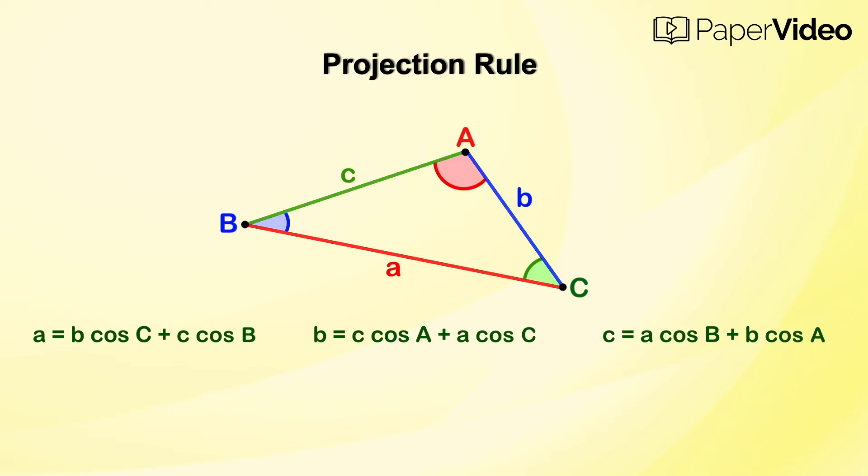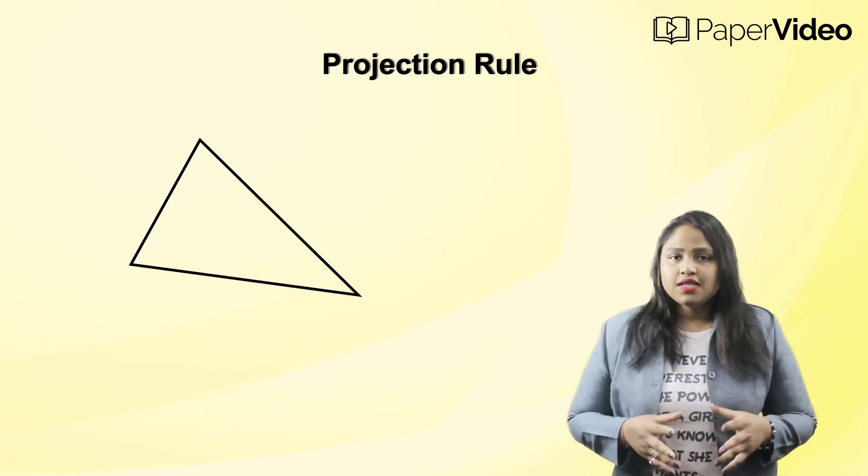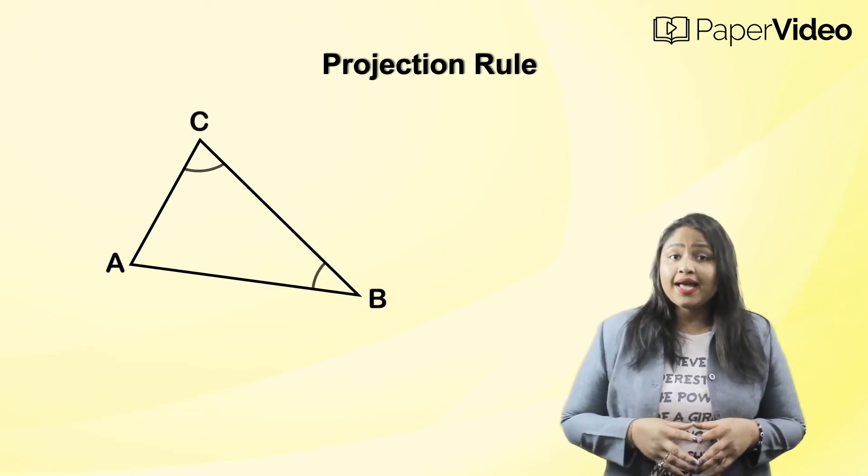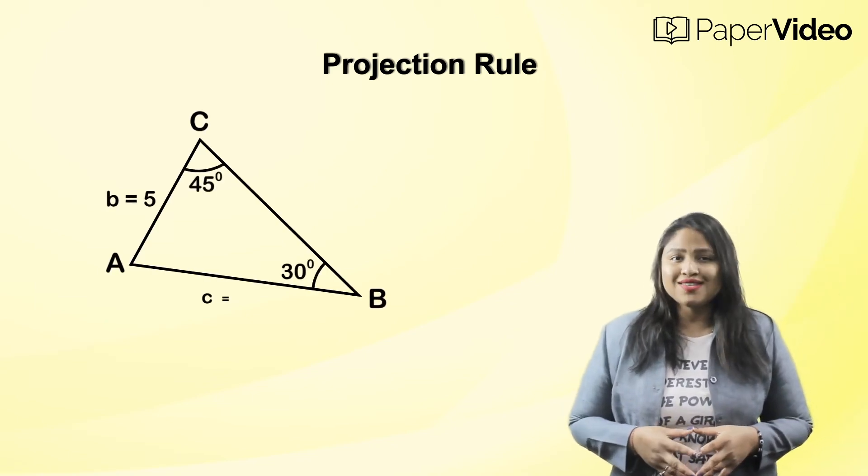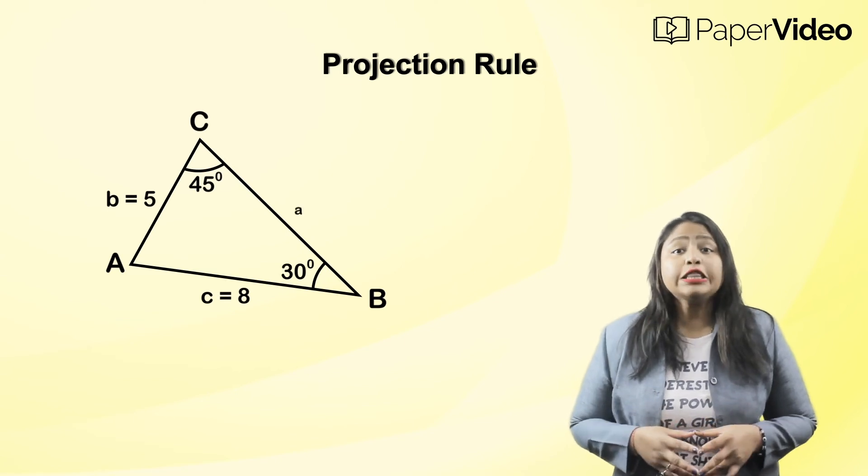Let us understand this concept with the help of an example. Suppose we have a triangle whose two angles and two sides are known to us and we want to find the third side.